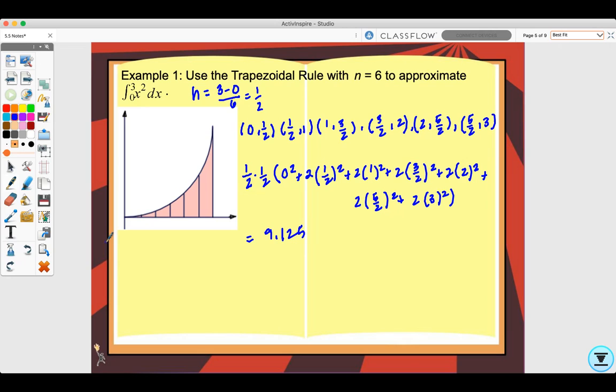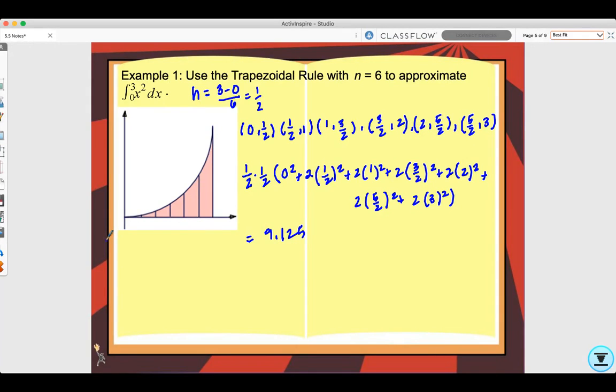Now, a couple of questions. Is your approximation too big or too small, and why? This approximation is too big because the function is concave up. If we had found the left Riemann sum, would our approximation have been too big or too small? It would have been too small because this is an increasing function. And if we were to compute the midpoint Riemann sum, would our answer be too big or too small?